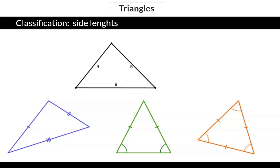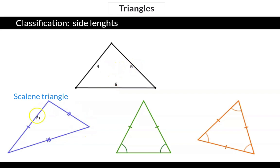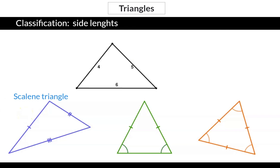If we now move to classification using the side lengths, I'm going to start off with a triangle where all three sides have different lengths. This is called a scalene triangle. In a scalene triangle all the angle sizes also differ.